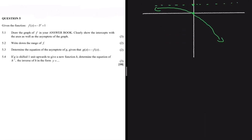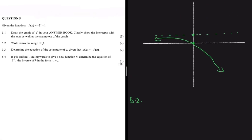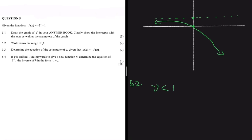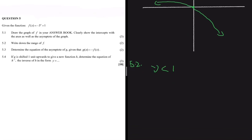Moving on to 5.2: write down the range of f. We can see that f(x) will never be greater than 1. So the range — the y values — will always be less than 1, because the asymptote is restricting us there.